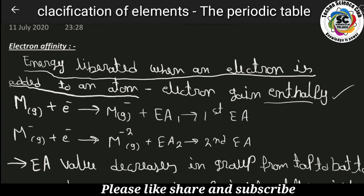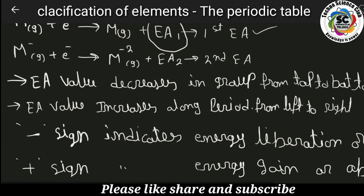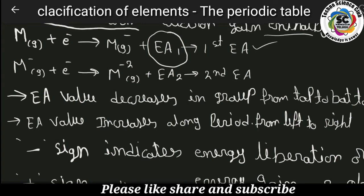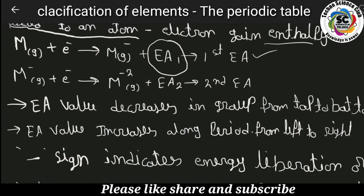EA₁ is called first electron affinity. When one electron is added to one atom, the energy released is called the first electron affinity. When an electron is added and the atom becomes a negative ion, a negative sign appears. This negative sign indicates the energy is liberated or lost.